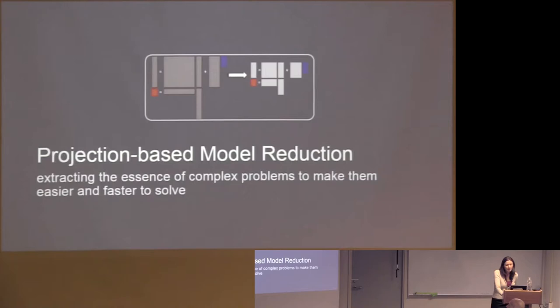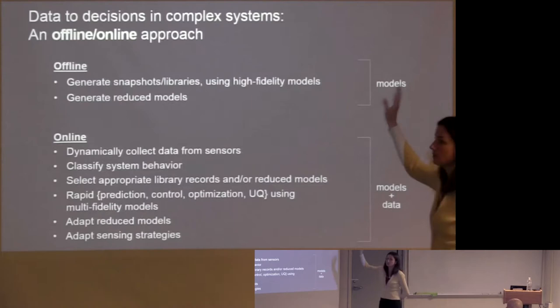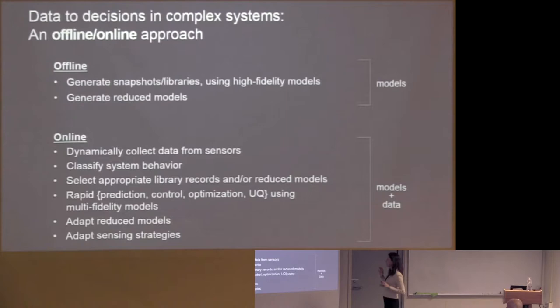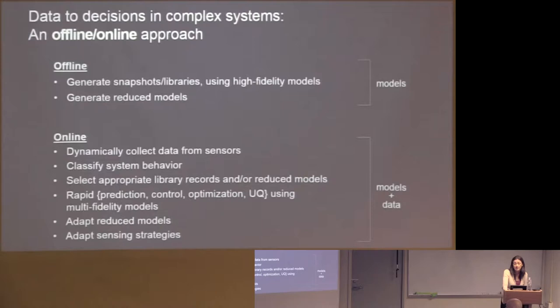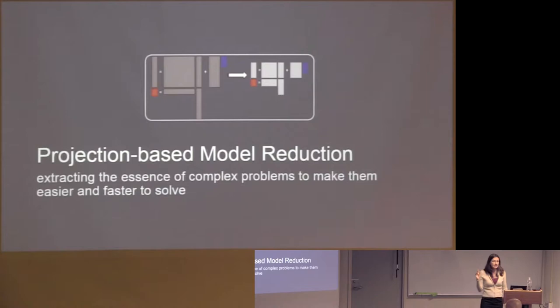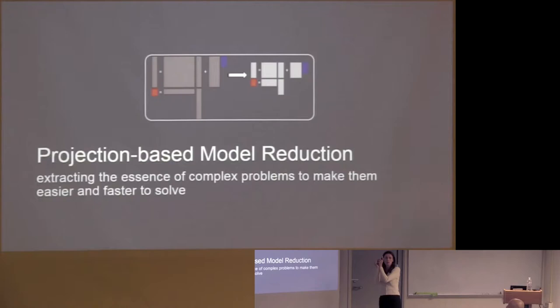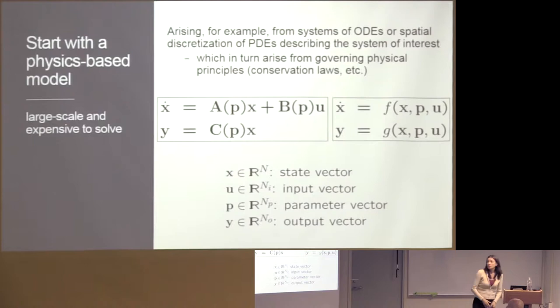Let me get into more details about how we can do this. My group has been working on all aspects of these problems, and I picked two: adaptation of reduced models, and uncertainty quantification with multi-fidelity models. Let me start with the basics of projection-based model reduction — taking a big, expensive, high-fidelity model and distilling it into a smaller, low-dimensional system that's faster and easier to solve.